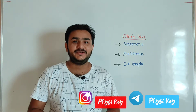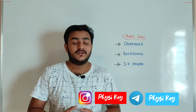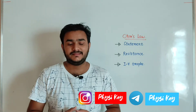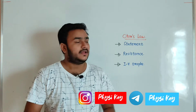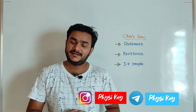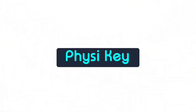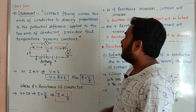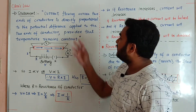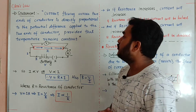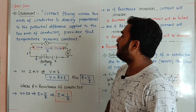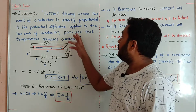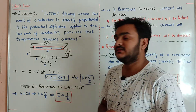Welcome back to the Physiki guys. In today's video, we will discuss one of the important concepts of class 10 chapter 12 electricity, and the topic is Ohm's law. Let us start with the statement that the current flowing across the two ends of a conductor is directly proportional to the potential difference applied to the two ends of the conductor, provided that temperature remains constant.